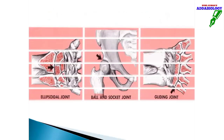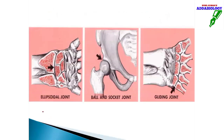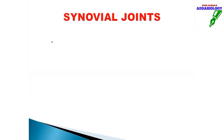Other types of diarthrosis include the ellipsoidal joint (wrist bone), ball and socket joint (hip joint), and gliding joint. These are all different types of freely movable joints that we need to study.